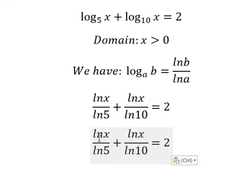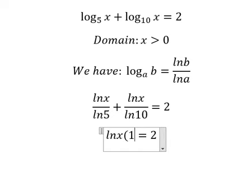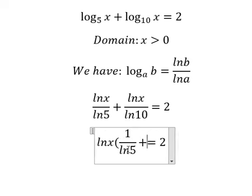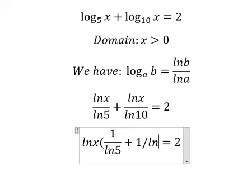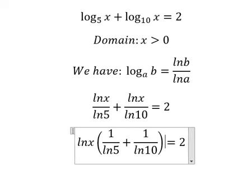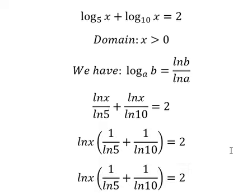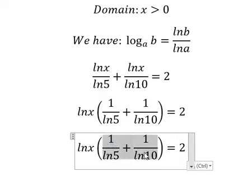Now we can do factorization by factoring out ln(x). We have ln(x) times one over ln(5) plus one over ln(10) equals 2. Next we divide both sides to isolate ln(x).